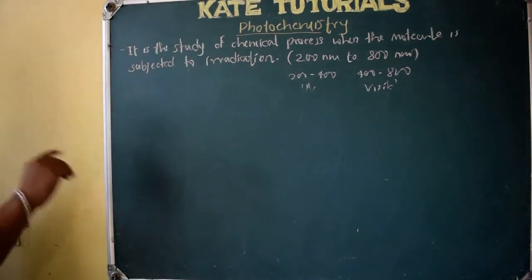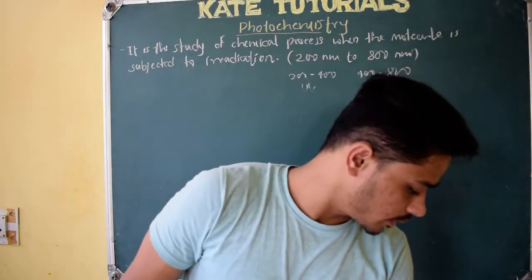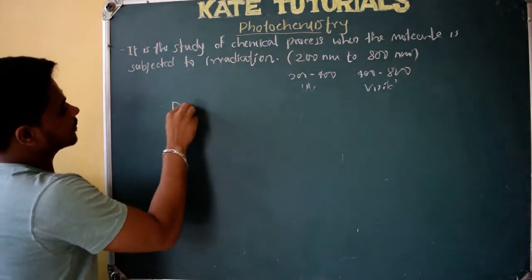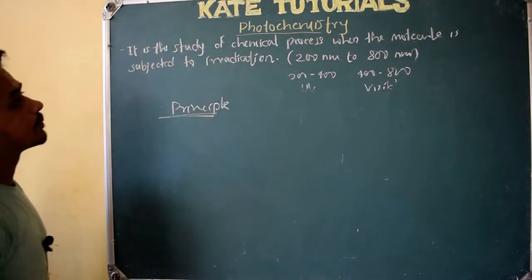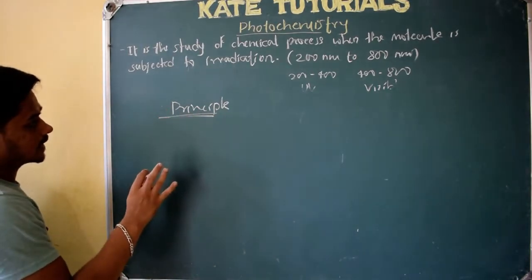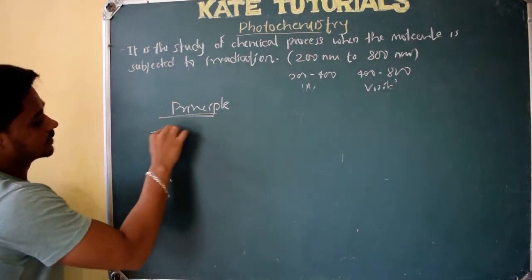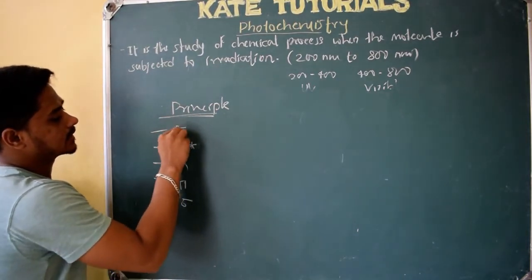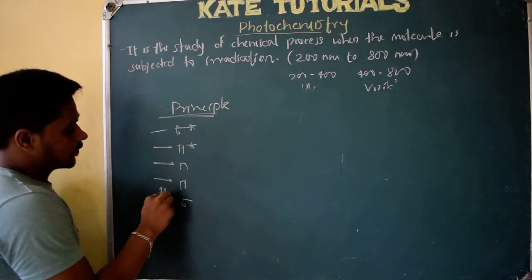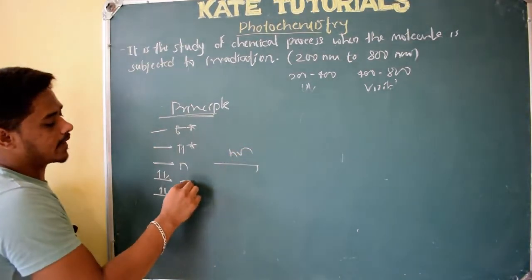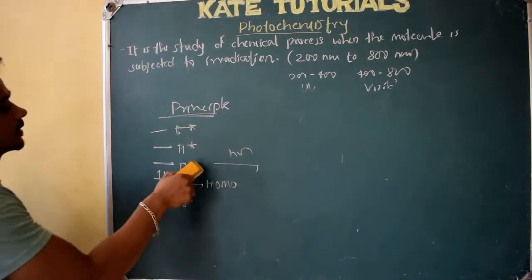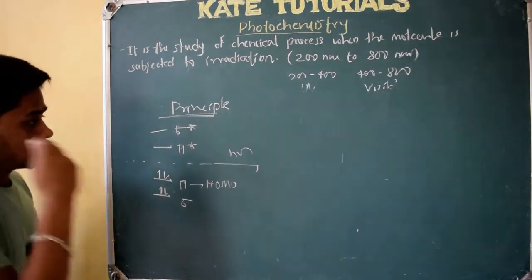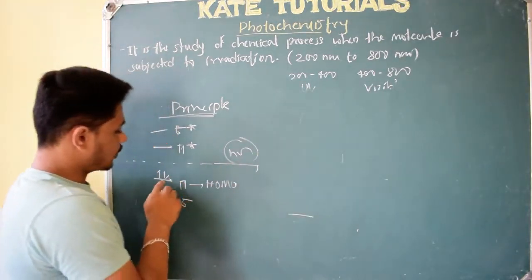Now let us see the principle of photochemistry. In photochemistry — just like UV-visible spectroscopy — we have sigma bond, pi bond, n (non-bonding), pi star, and sigma star orbitals. When we apply photochemical conditions, pi acts as HOMO. Assuming non-bonding electrons are not present in the molecule, we have two bonding orbitals and two anti-bonding orbitals. When I apply photochemical condition, the electron from HOMO jumps to the anti-bonding orbital.